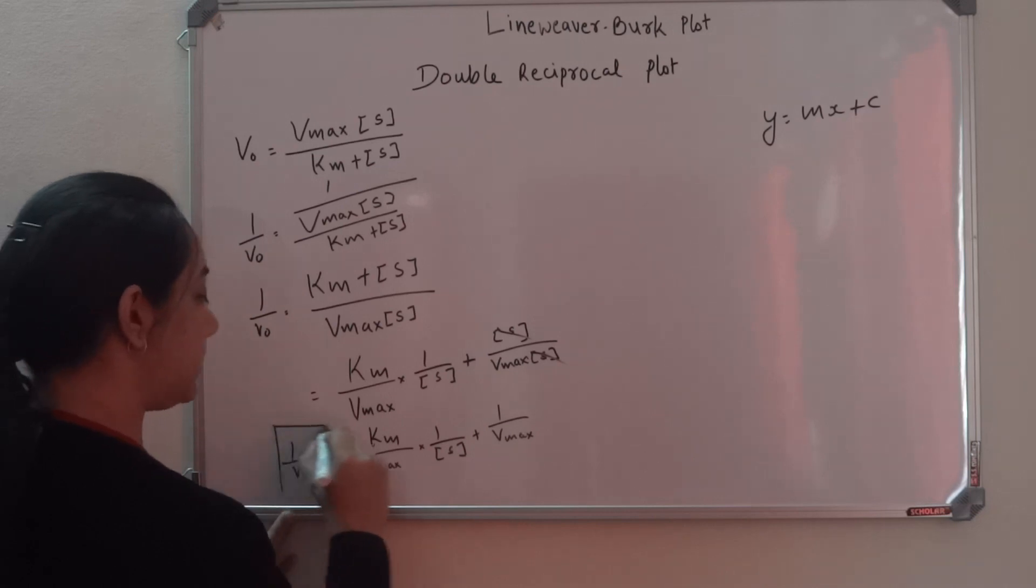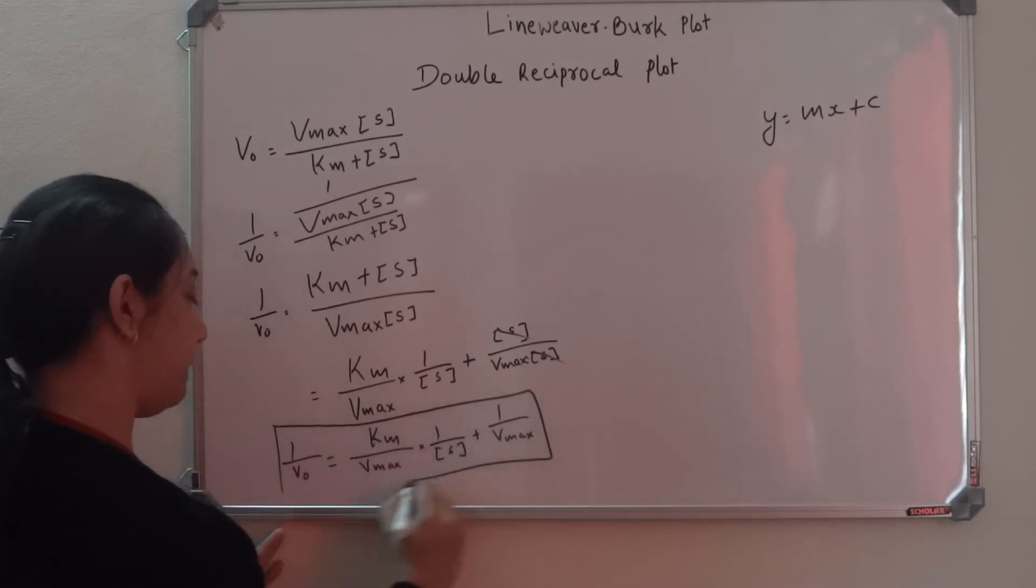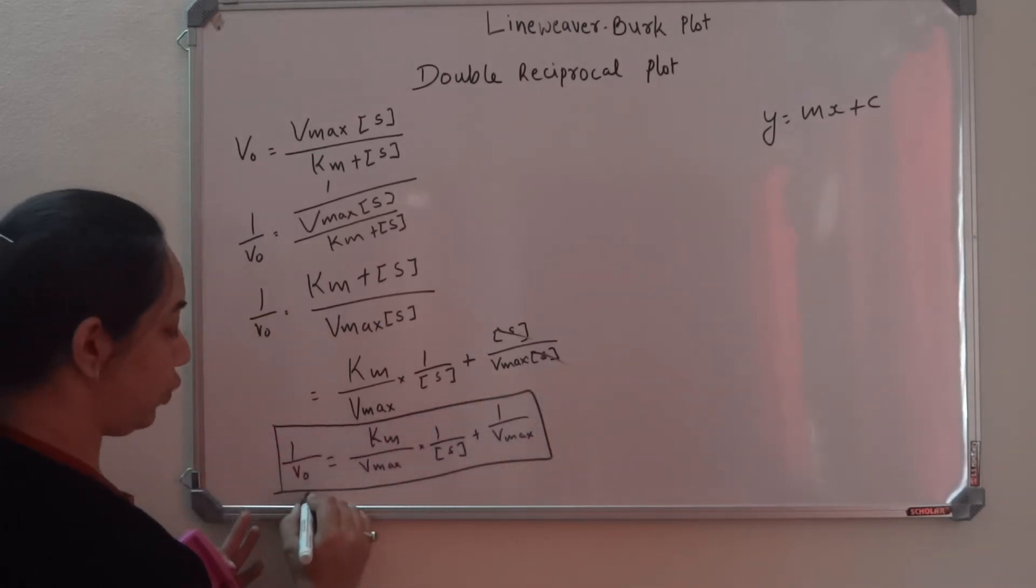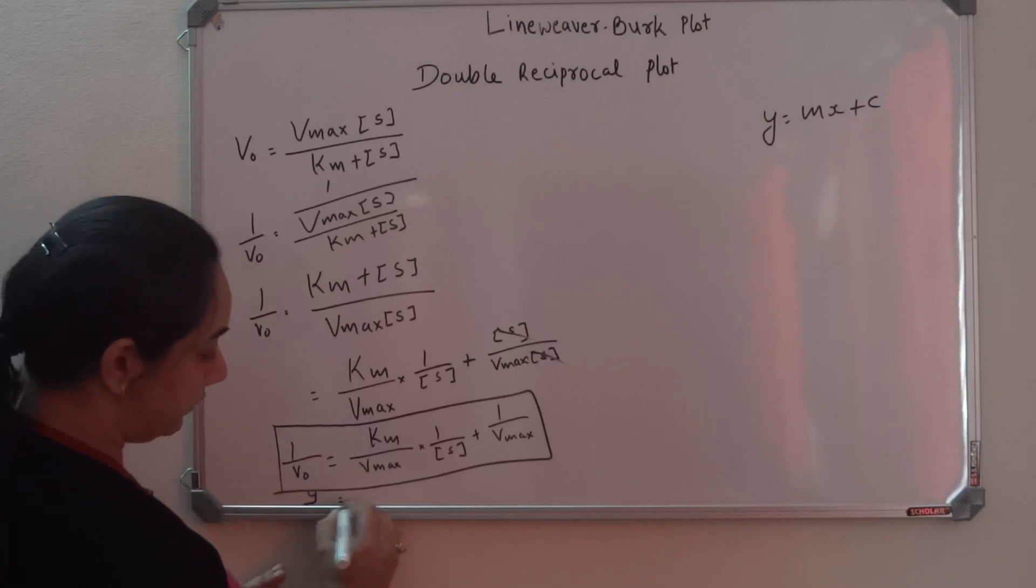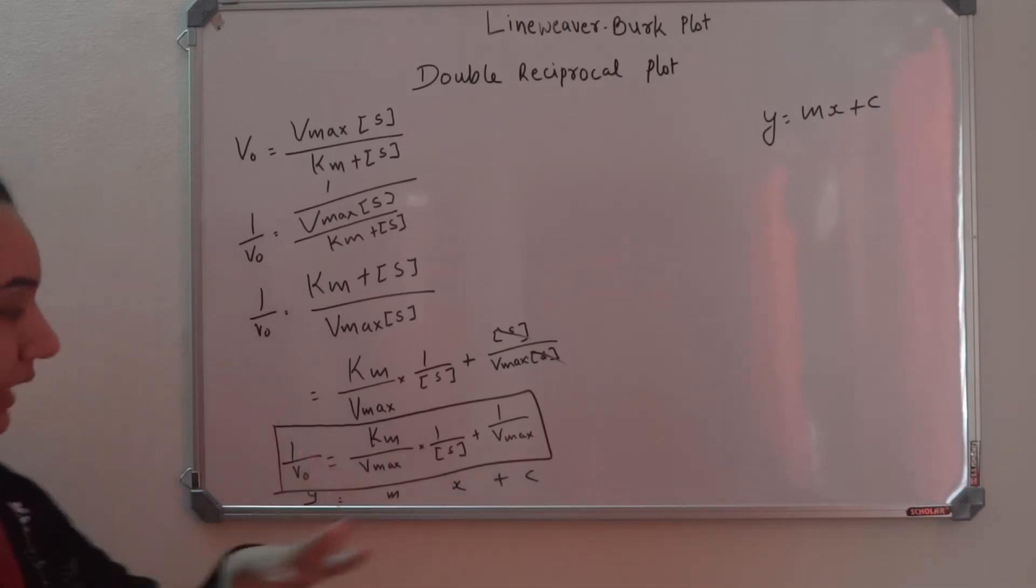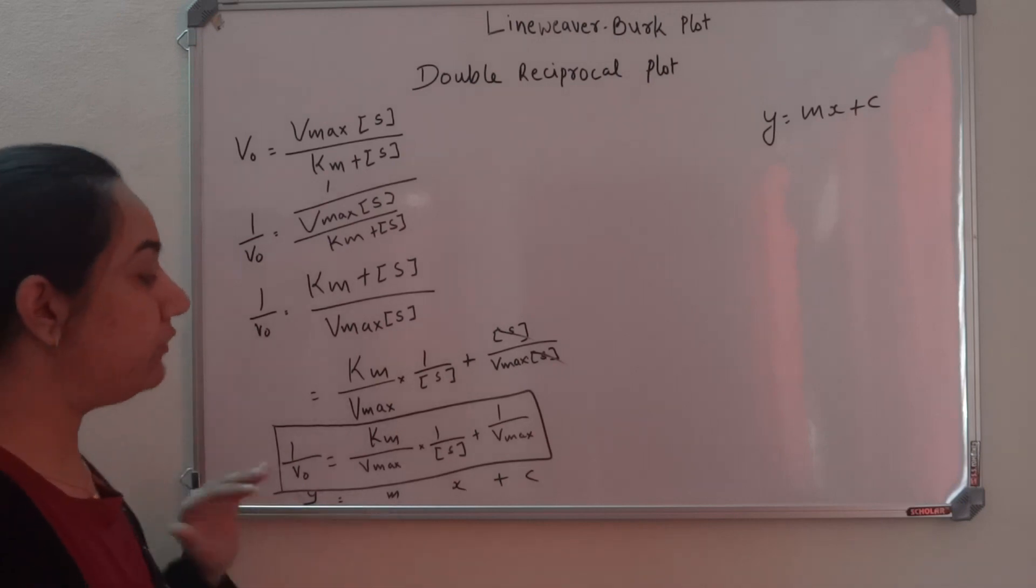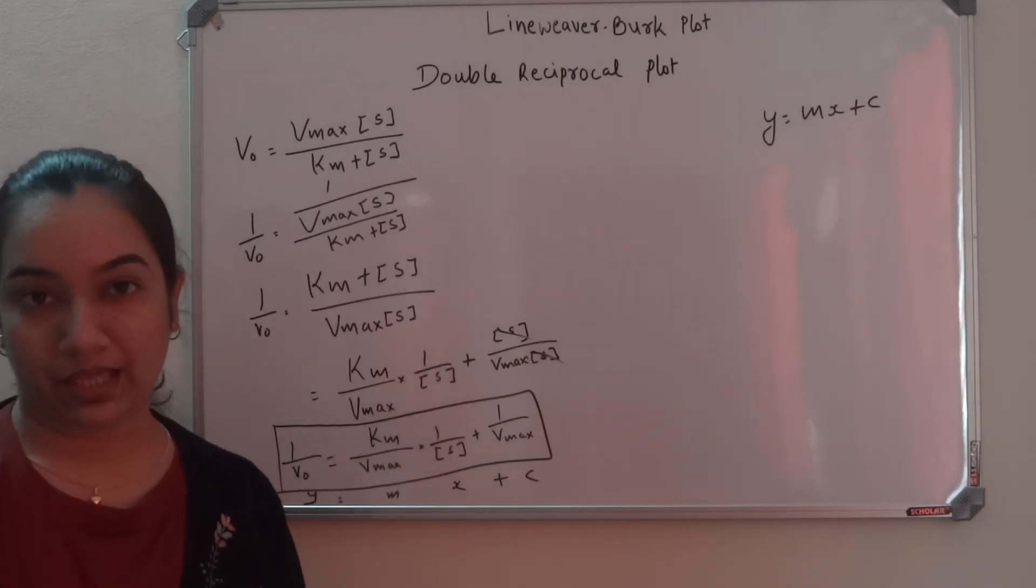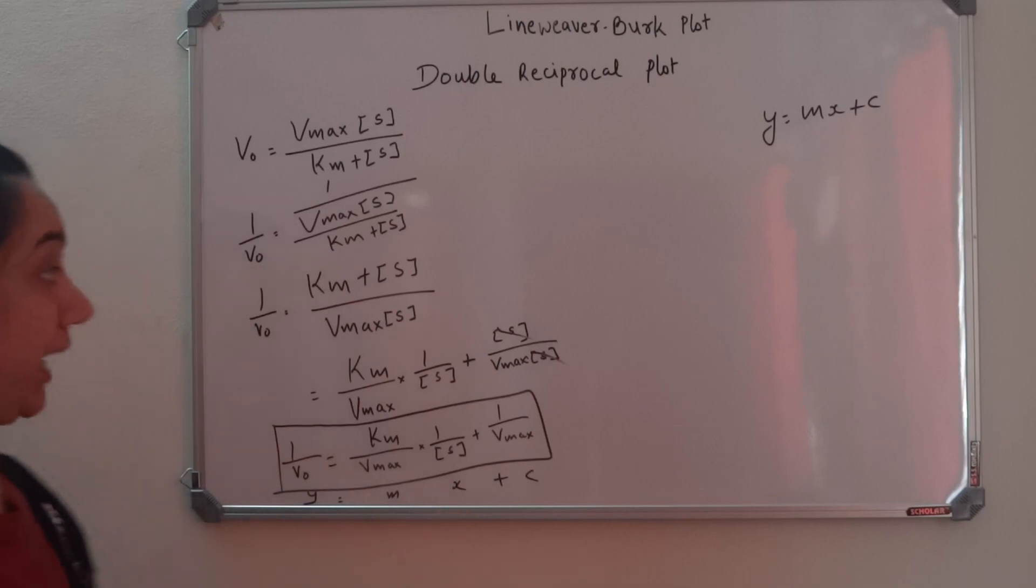Now can you see this equation? This is y equals mx plus c. We just rearranged it in the form of a straight line equation. So when we plot this now, what do we get?